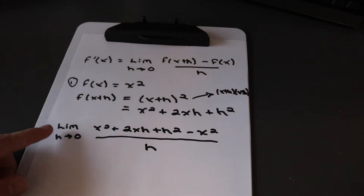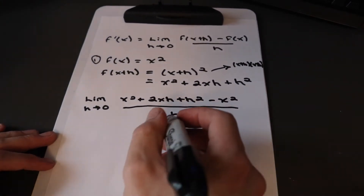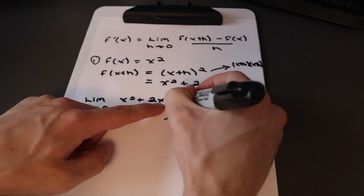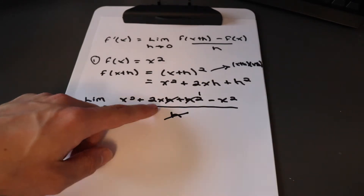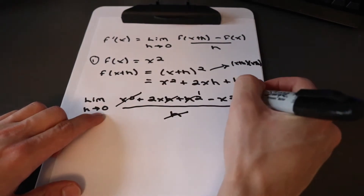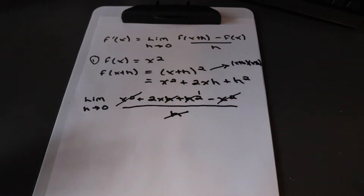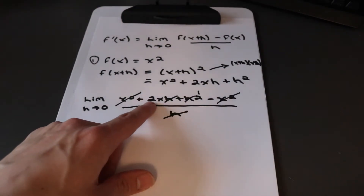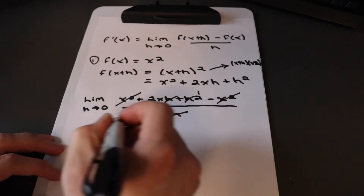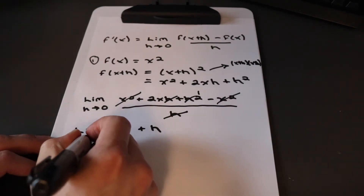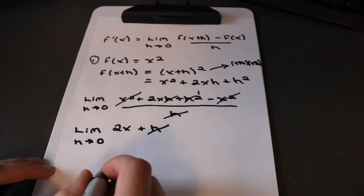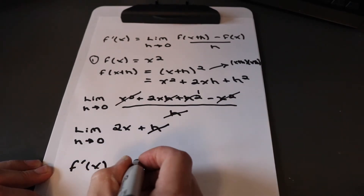Now we cancel our h's before applying the limit. We cross out one h from the numerator terms — canceling one from 2xh leaving 2x, and one from h squared leaving h. Then x squared minus x squared cancels to zero, leaving us with the limit of 2x plus h. Applying h equals zero eliminates the last term, so f prime of x equals 2x.